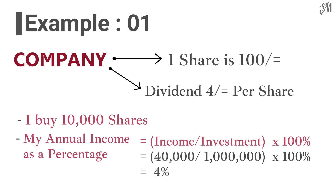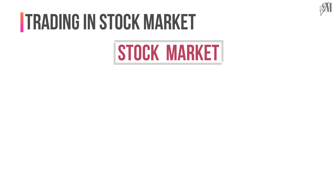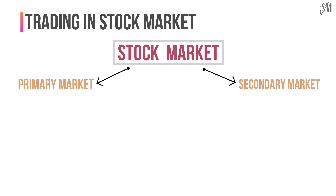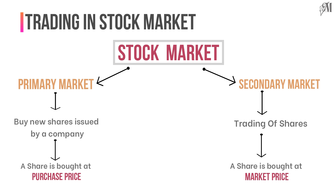Now let us see how trading in the stock market takes place. The stock market has two sectors: the primary market and the secondary market. In the primary market, we can buy new shares issued by a company. In the secondary market, trading of existing shares takes place. In the primary market, a share is bought at the purchase price, and in the secondary market, a share is bought at the market price.